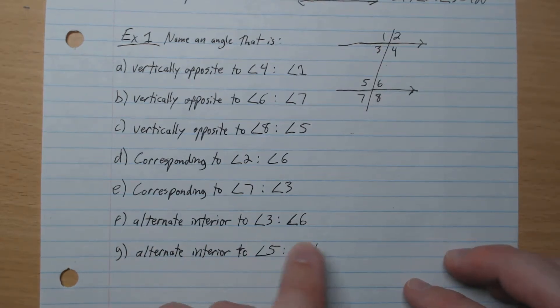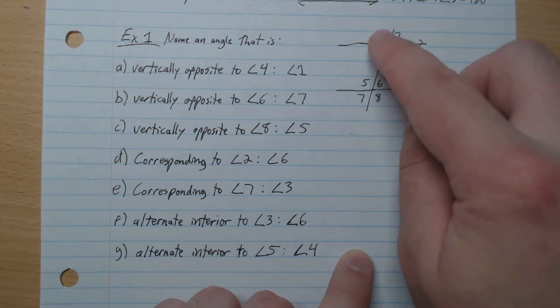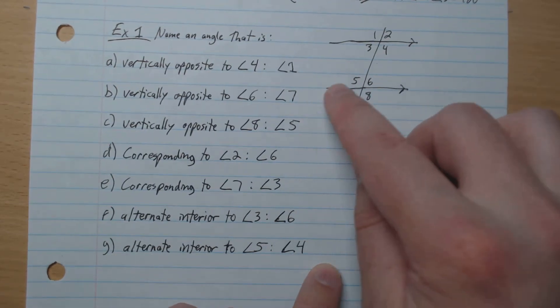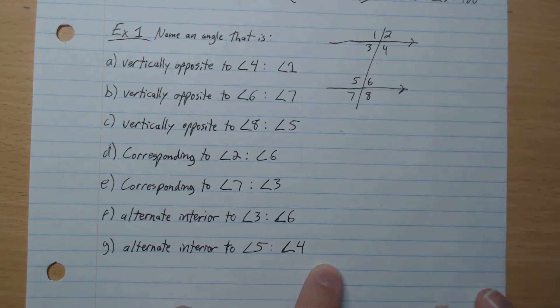Alternate interior to 3. That's our Z like this. So 3, 6. Alternate interior to 5, 5, 4 like that.